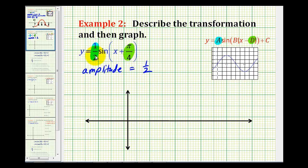The amplitude of this function will be one-half. Remember, it's the absolute value of a. And since d is equal to negative pi over four, the function will be shifted left pi over four units. That's called the phase shift.